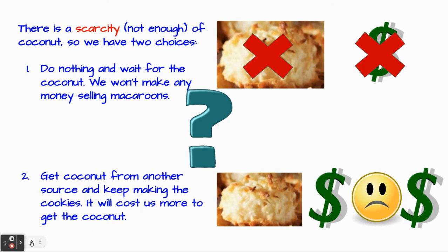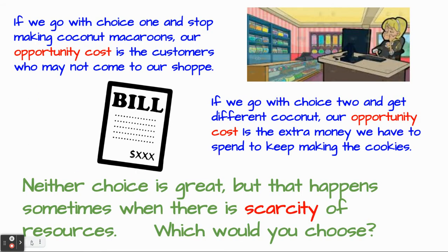The other choice is getting coconut from somewhere else and keep making the cookies, but that coconut costs us more money. If we go with choice one and stop making the coconut macaroons, our opportunity cost is the customers who may not come to our store — we might have an empty store. But if we go with choice two and get different coconut, our opportunity cost is the extra money we have to spend to keep making the cookies. Neither choice is great, but that happens sometimes when there is a scarcity of resources. Which one would you choose?